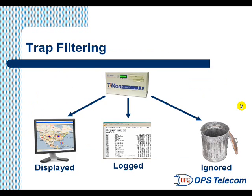And one of those advanced features of Tmon is trap filtering. This is important because, quite frankly, you don't want to see every SNMP trap that comes in. That's one of the problems with low cost or free SNMP managers — they show you everything, and in most networks it's simply too much. Tmon allows you to specify what types of alarms you want displayed on an interface, what type of alarms you simply want logged for later review, and which alarms simply don't deserve human attention and should be ignored.